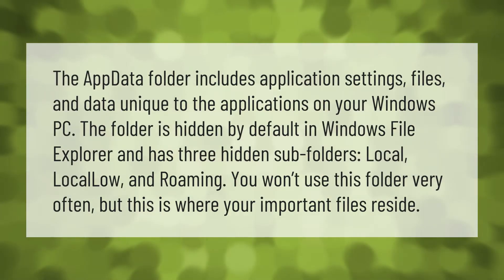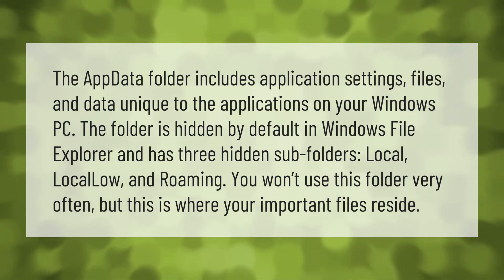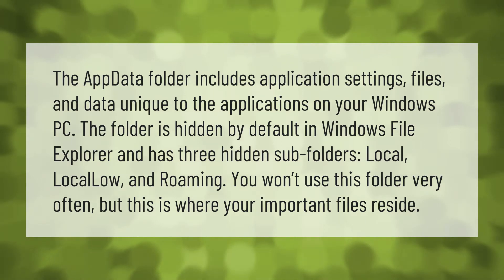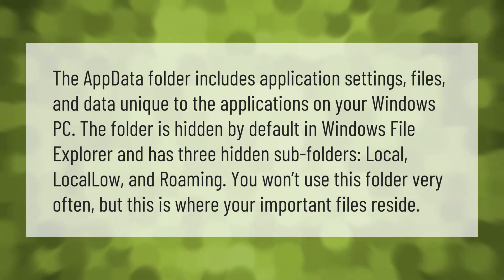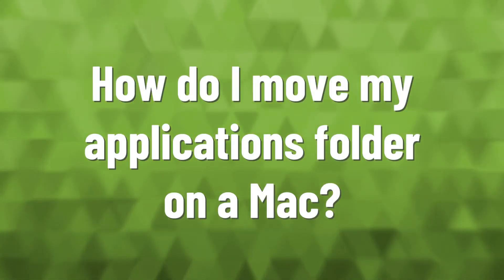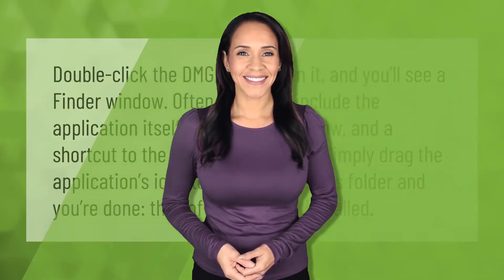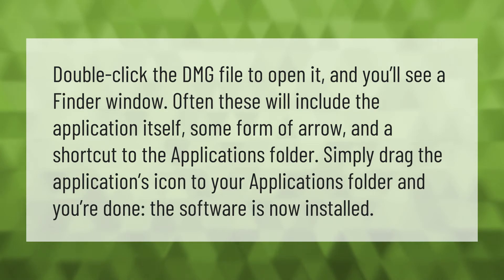The AppData folder includes application settings, files, and data unique to the applications on your Windows PC. The folder is hidden by default in Windows File Explorer and has three hidden subfolders: Local, LocalLow, and Roaming. You won't use this folder very often, but this is where your important files reside.